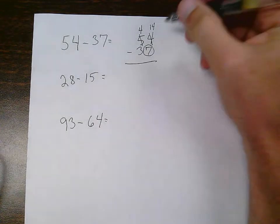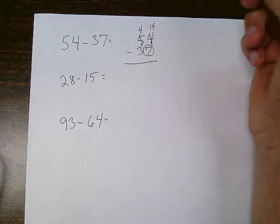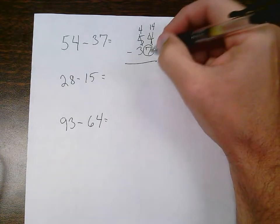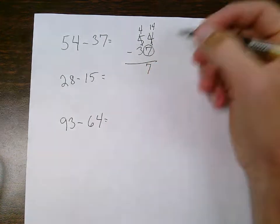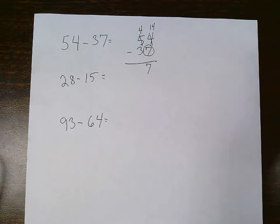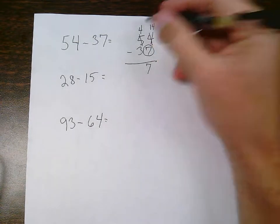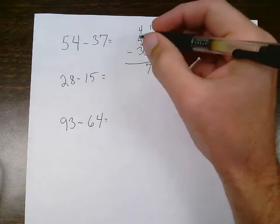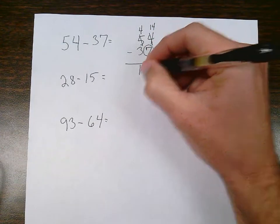Then after I borrow, I do my subtracting. 14 minus 7 is 7. I go over this column, 4 minus 3. I ask myself the question, can I do it? Yes, I can, because the top number is bigger. 4 minus 3 is 1. So my answer is 17.